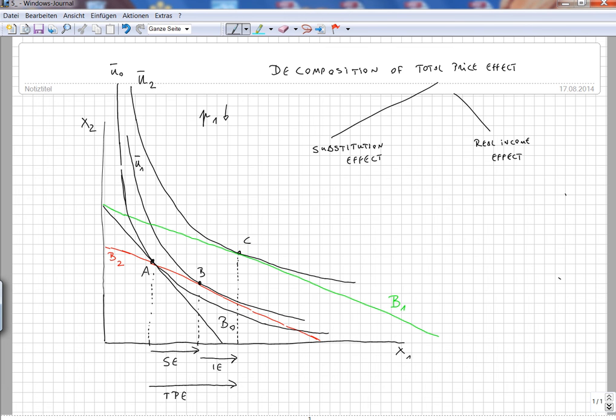As you can see, the total price effect goes to the right. If the price goes down, total price effect will go up, which means that we're talking about an ordinary good. The first good is ordinary because when the price goes down, the quantity demanded goes up.